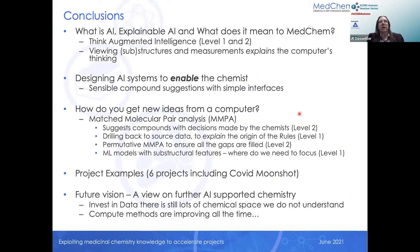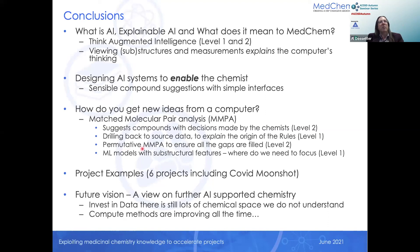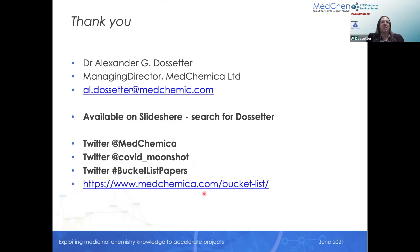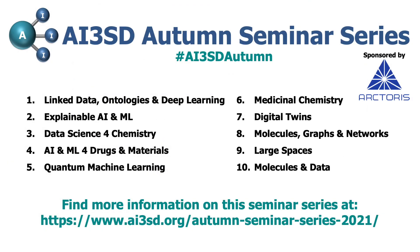To summarize: I've talked about why explainable AI matters in the context of medicinal chemistry. We're talking about augmented intelligence at level one and level two — using substructure analysis and real measurements so chemists can understand what the computer is thinking and make better strategic decisions. I've talked about designing compounds and how to get a computer to generate novel ideas through match molecular pairs. Give us a shout if you want the full talk at your organization. Thank you very much — the slide deck is available on SlideShare.